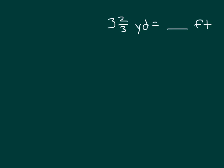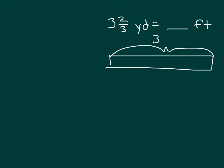Let's draw a tape diagram to model this problem. We want to convert three and two-thirds yards into feet. So this bar represents three and two-thirds yards. Let's partition the bar into three whole yards and one smaller unit to represent two-thirds of a yard.